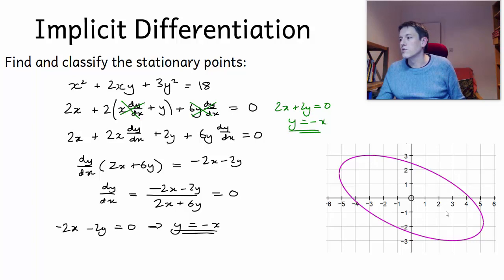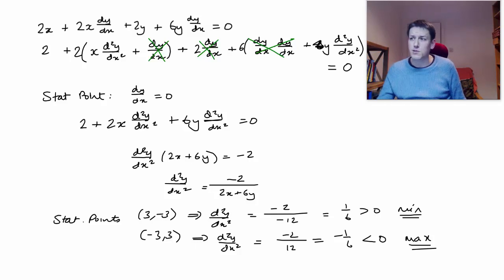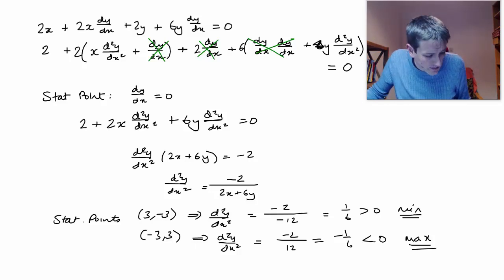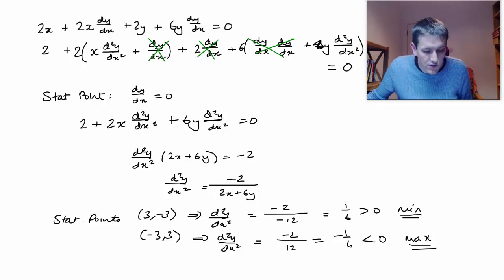If we go back to the curve, we can see that when x equals 3 and y equals minus 3 we get a minimum, and when x equals minus 3 and y equals 3 we get a maximum, and we can verify this on the graph — which is exactly what we'd hope. I'll leave it there for this video. Leave a note in the comments if there's anything that's not clear or if you've got ideas for other videos you'd like me to make. I try to respond to requests if I can, and I hope that was useful.